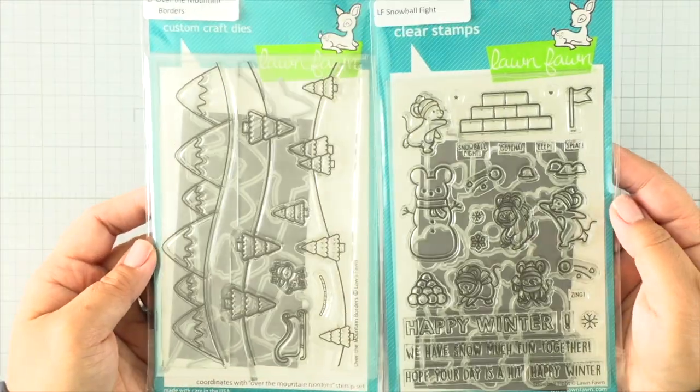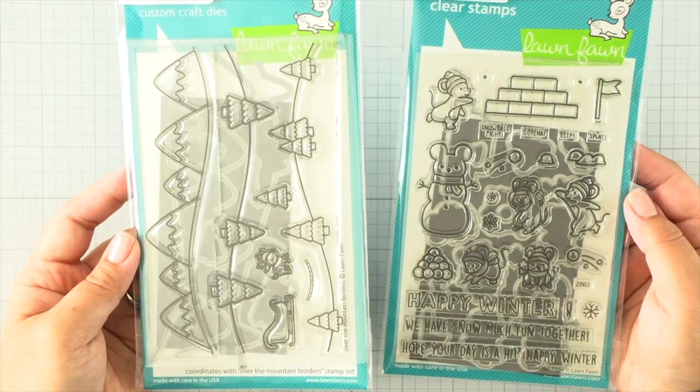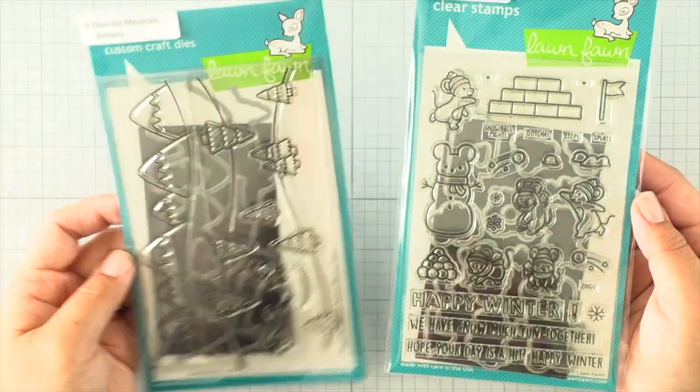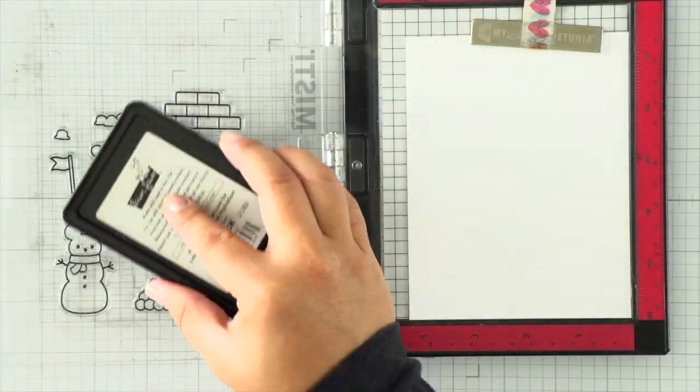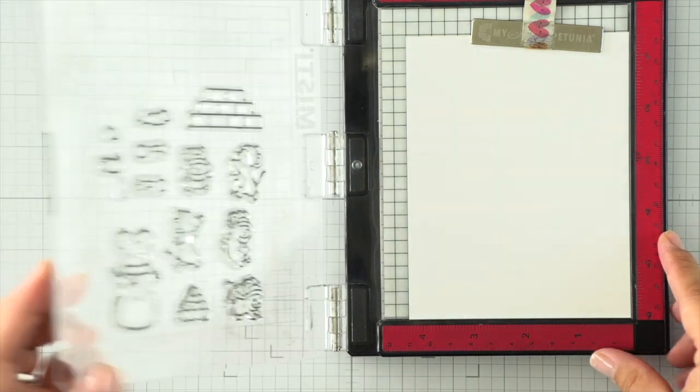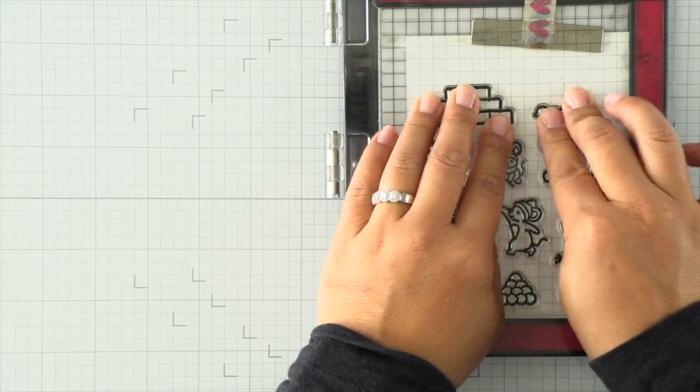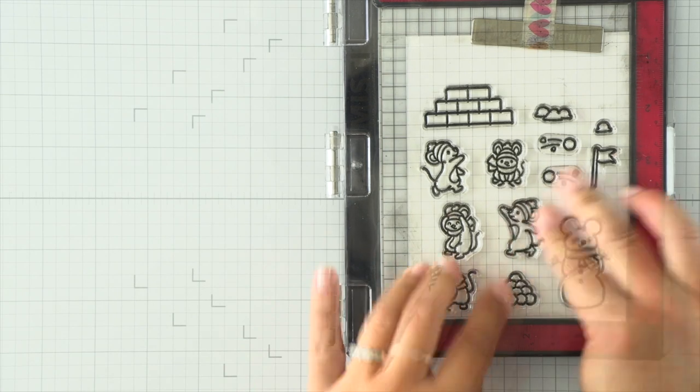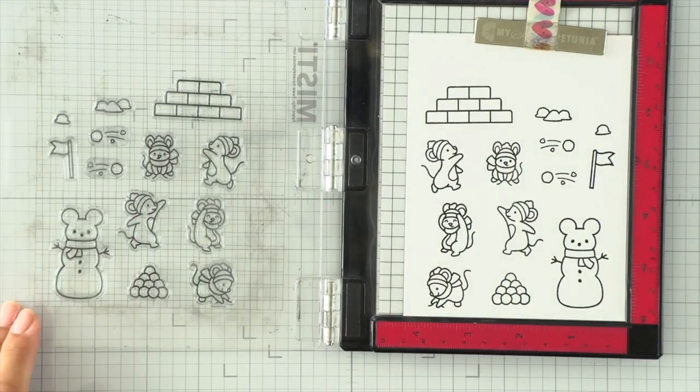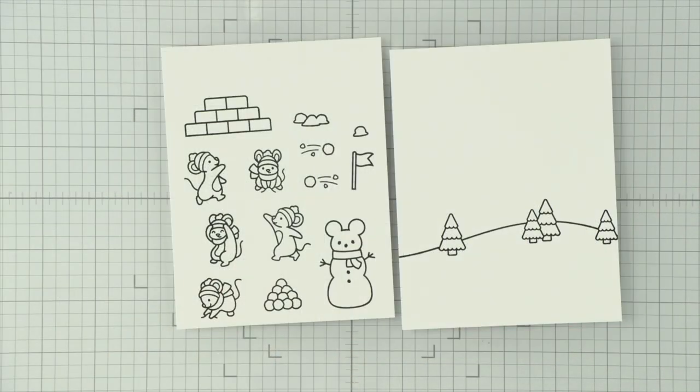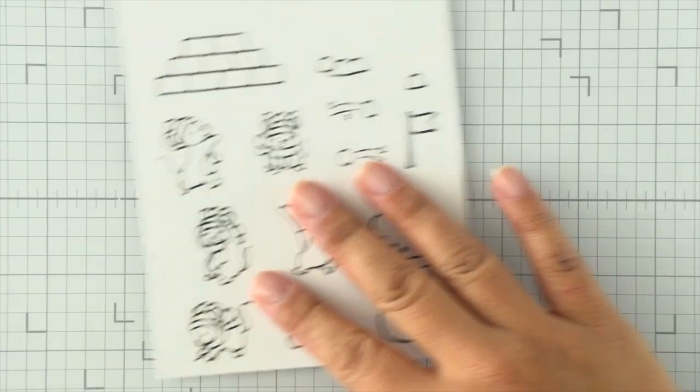I'm going to set that aside to dry and we'll stamp out our images and color those while it dries. I have the Over the Mountain Borders on my left and the Snowball Fight set on my right. I'll stamp images from both. I won't use all of the images because I won't have space on my card.